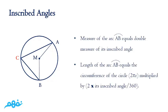And also the length of the arc equals the circumference of the circle multiplied by 2, multiplied by its inscribed angle, all over 360.